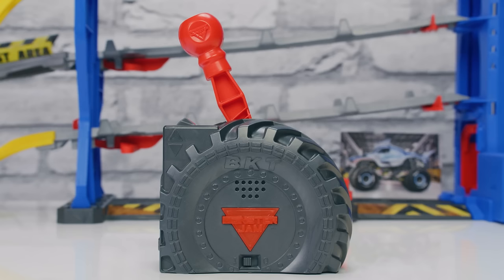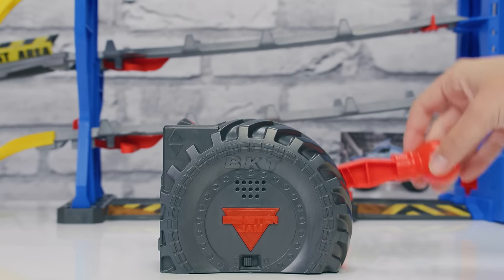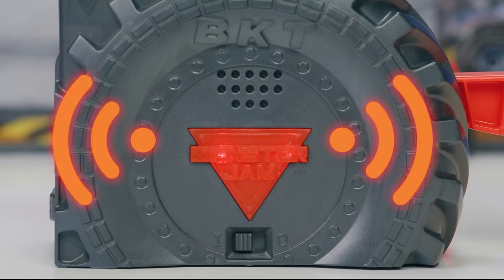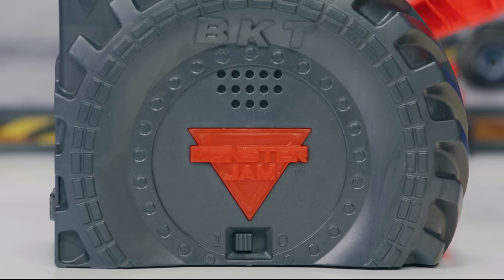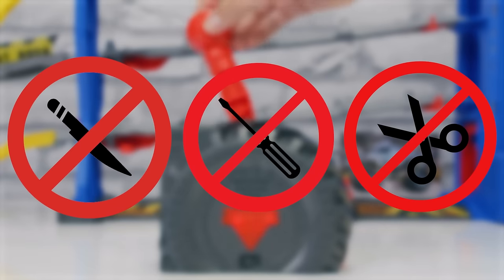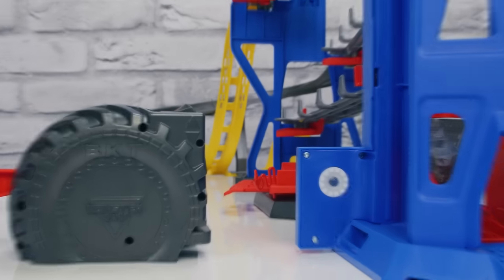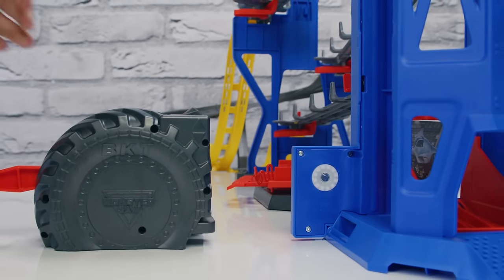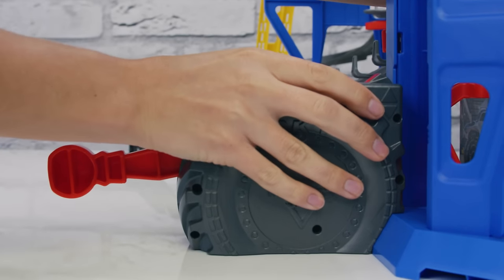The crank has real working lights and sounds. This is Monster Jam! Never use sharp objects to remove batteries. Finally, add the crank by sliding it into place at the bottom of the elevator.